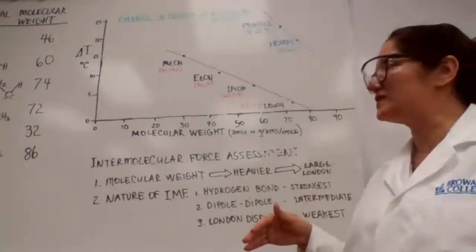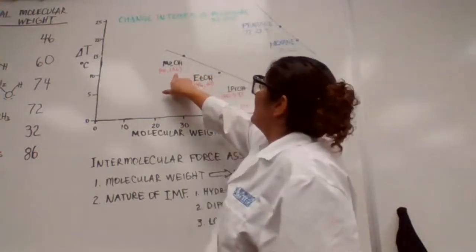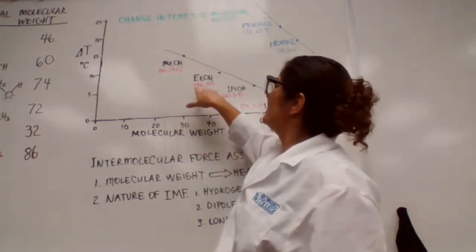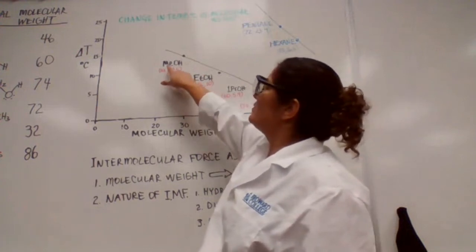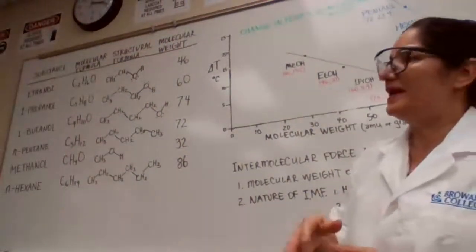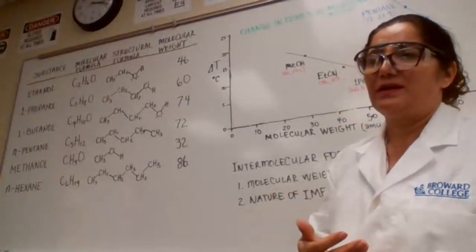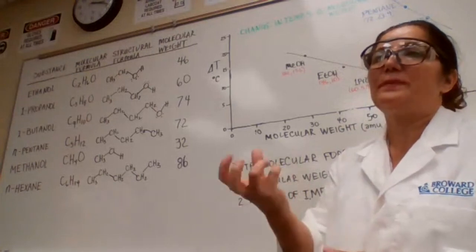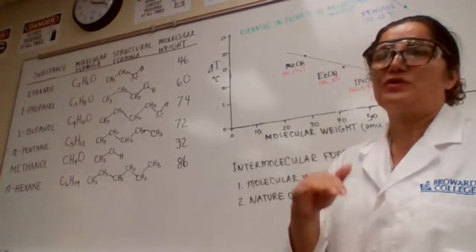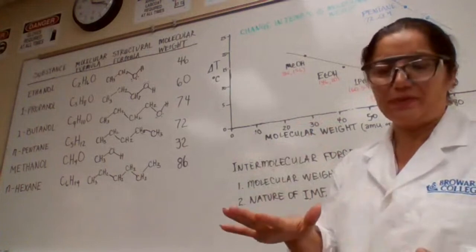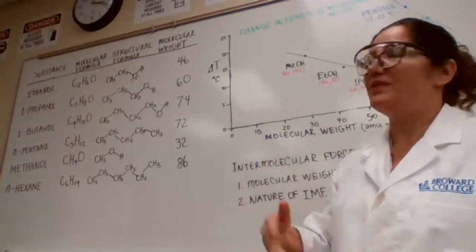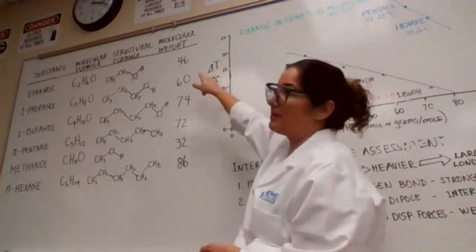Both methanol and ethanol have hydrogen bonding, but methanol is lighter — it has a molar mass of 32 g/mol versus ethanol's 46 g/mol — so methanol will evaporate at a faster rate. To measure the rate of evaporation: evaporation is an endothermic process, so it absorbs heat from the environment, causing the temperature of the environment to drop. The faster the evaporation, the greater the change in temperature (delta T).